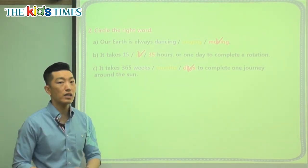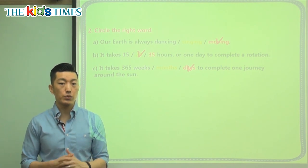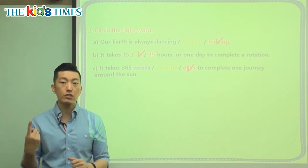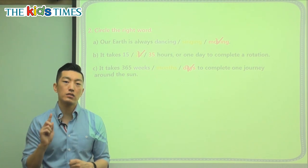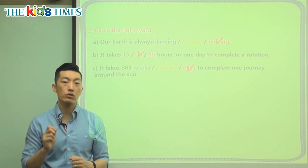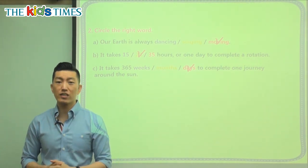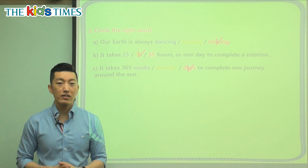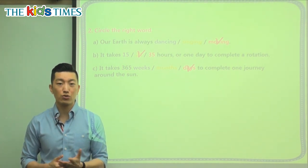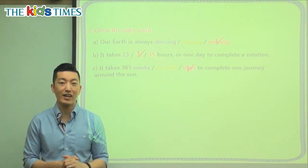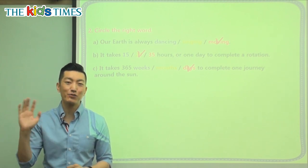As we learned in today's article, the Earth has two movements: spinning is rotation, and going around the Sun is the orbit or revolution. I hope you enjoyed today's lesson and share these two words — rotation and revolution — with all of your friends. I hope to see you again next time. Goodbye, everyone.